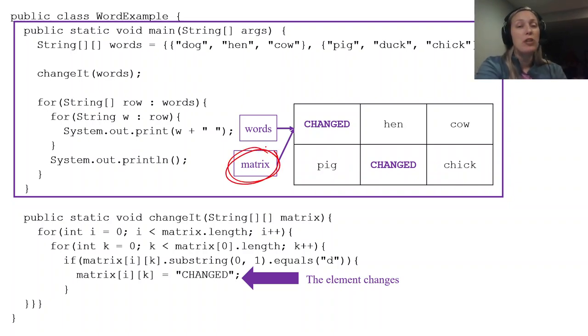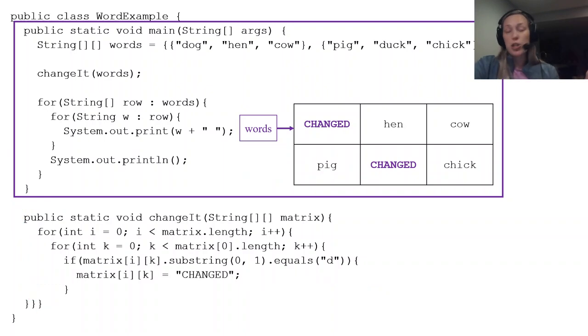Now all of this happened to matrix because I'm in my changeIt method. Once my changeIt method is completed, matrix gets garbage collected, meaning it goes away. It's no longer a reference, and I go back up and I go to this right here. So this right here, now I'm going to print off my two-dimensional array.